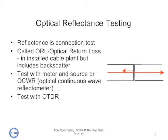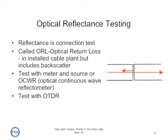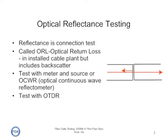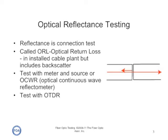The easiest way to test reflectance is with a meter and source, or an optical continuous wave reflectometer, to actually measure the light reflected from a given connector under test. You can also test it with an OTDR if you have an installed cable plant, and it will not only give you a measure of reflectance, but will also tell you where the reflectance is in the cable plant.